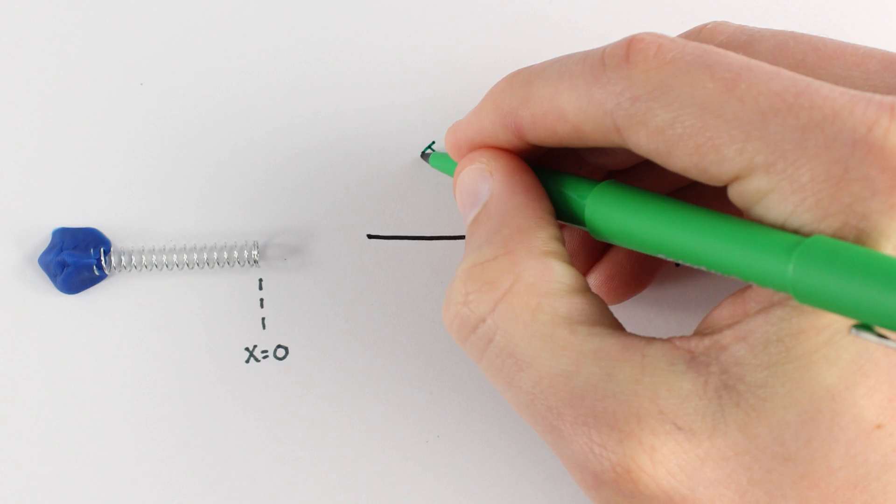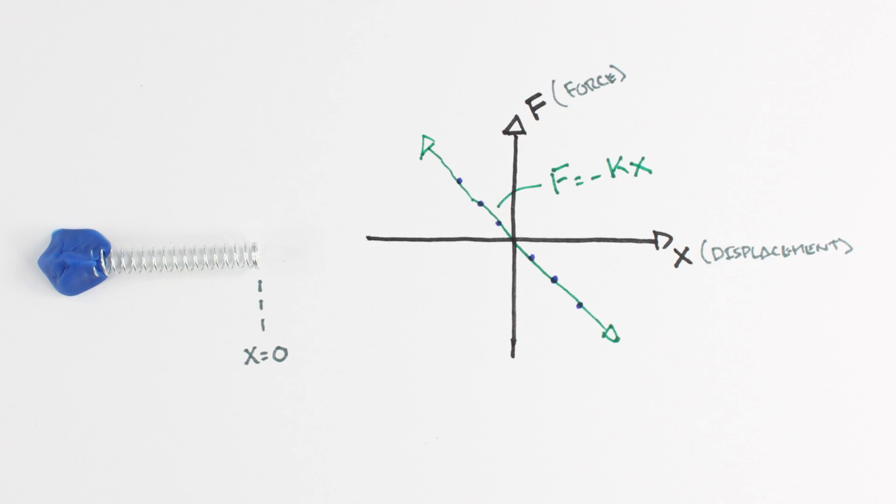This relationship is known as Hooke's law, and can be written as F is equal to minus kx, where k is the spring constant, which tells us how rigid our spring is.